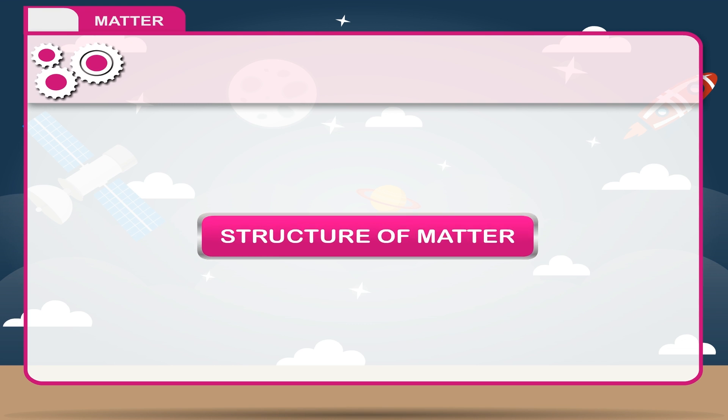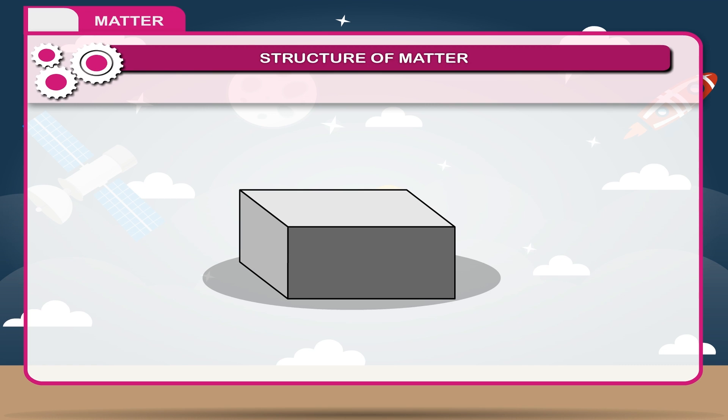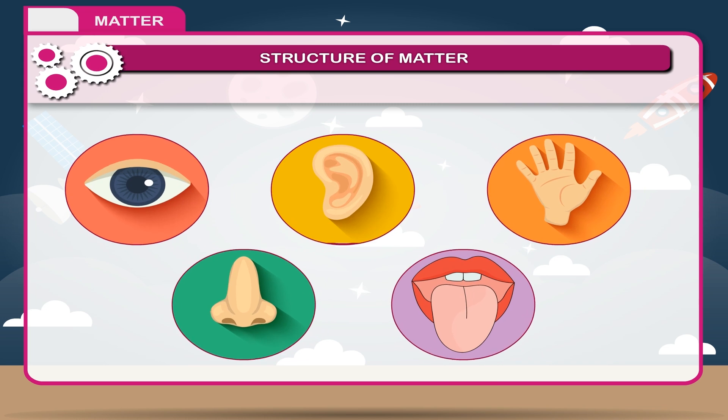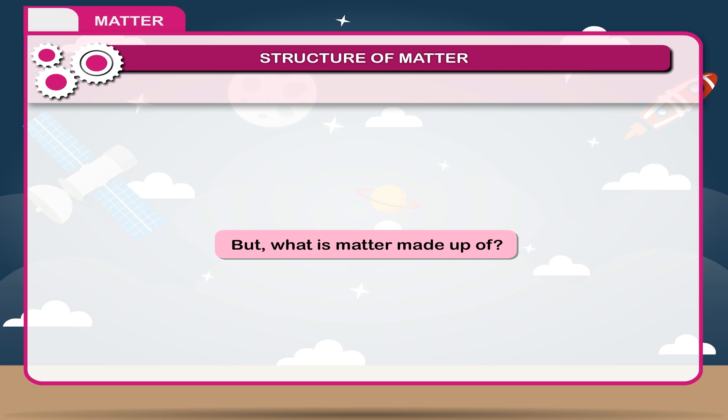Structure of Matter. Anything that has mass and occupies space and whose presence can be perceived by our sense organs is called matter. But what is matter made up of?